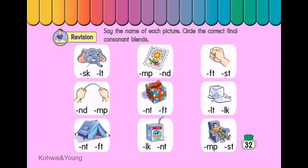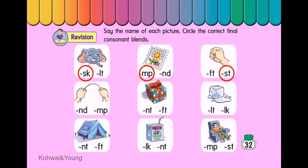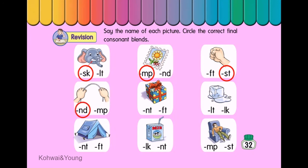Revision. Say the name of each picture. Circle the correct final consonant blends. Tusk. Stamp. Fist. Bend. Gift. Melt. Tent.